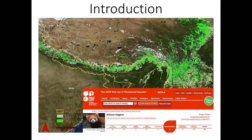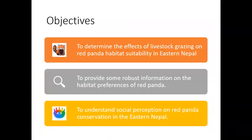It is listed as endangered in the Asian red data book. The objectives of the research are to determine the effects of livestock grazing on red panda habitat, to provide information on the habitat preferences of red panda, and to know the perspectives of local residents regarding red panda conservation.